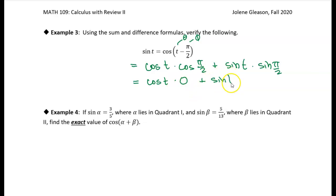Again, the sine of t, there's not much I can do with that, but I do know the sine of pi over 2 is 1. So this part goes away because anything times 0 is 0, and I'm just left with the sine of t, which is what I had here on the left-hand side. So that verifies that this is true by the sum and difference formulas.